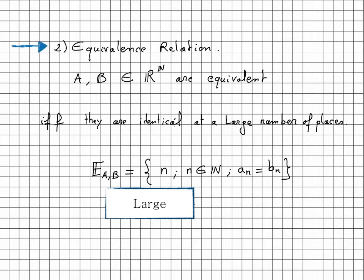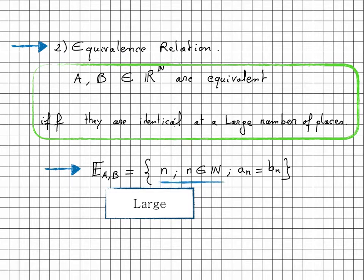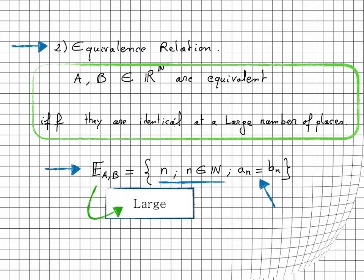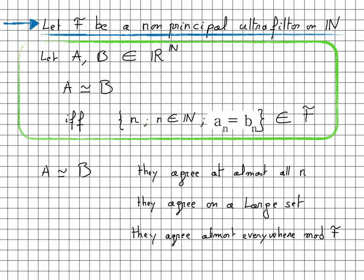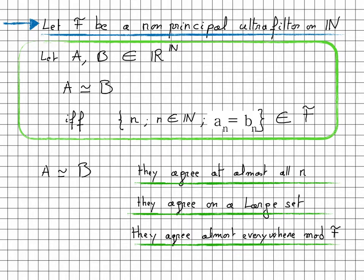Our aim had been to build an equivalence relation, saying that A and B in R^N are equivalent if and only if they are identical at a large number of places. To help with that, we define the set E(A,B) of integers n in N satisfying a_n = b_n. But we were still in need of a way to refer to this set as large. It is now with the help of the non-principal ultrafilter on N that we define the equivalence relation: A is equivalent to B if and only if the set of integers satisfying a_n = b_n belongs to the ultrafilter. When A is equivalent to B, we say they agree at almost all n, or they agree on a large set, or they agree almost everywhere modulo F.